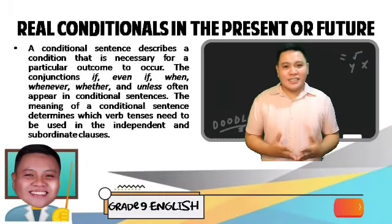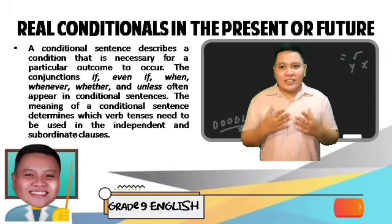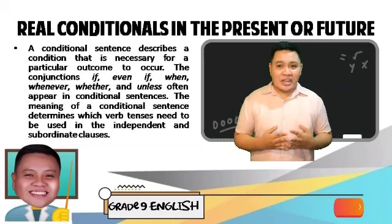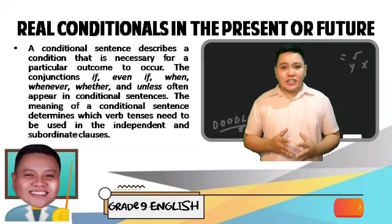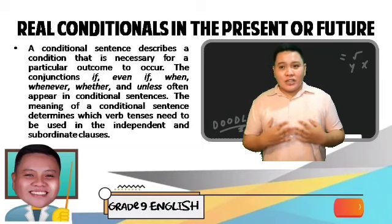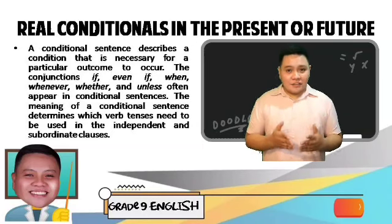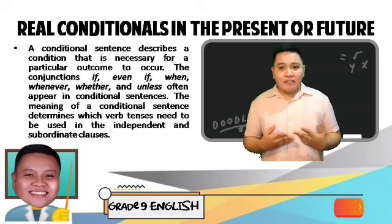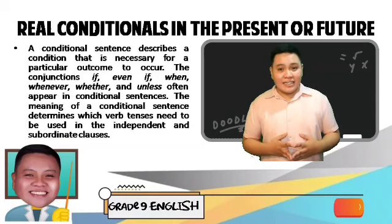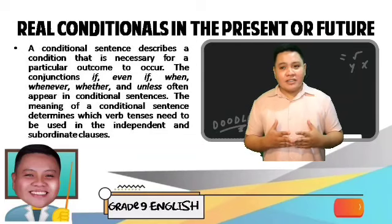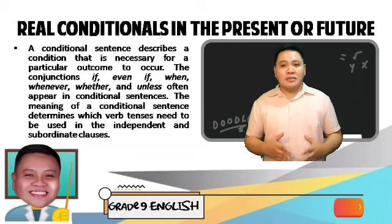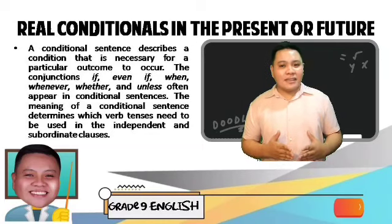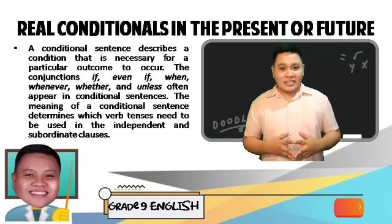So, what is conditional tenses? A conditional sentence describes a condition that is necessary for a particular outcome to occur. The conjunctions if, even if, whether, whenever, and unless often appear in conditional sentences. The meaning of conditional sentences determines which verb tenses need to be used in the independent and subordinate clauses.